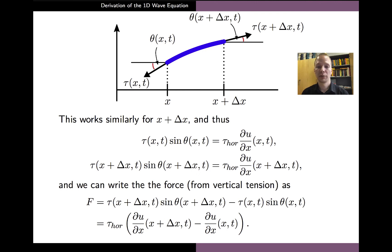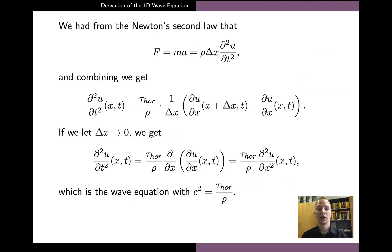The computation on the previous slide implies that the vertical tensions at x and at x plus delta x can both be expressed using the constant horizontal tension tau_HOR and the derivatives of the displacements with respect to x, as shown in the middle of the slide. Combining these two formulas with the expression for the total vertical force, we arrive at a very simple formula for the total force F. Going back to Newton's second law, which related the total vertical force F with the second partial derivative of u with respect to time t, and using our formula for F and dividing both sides by rho and delta x, we arrive at the second equation on the slide.